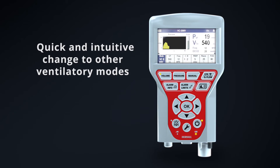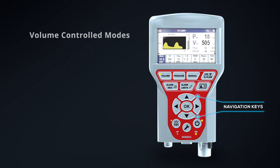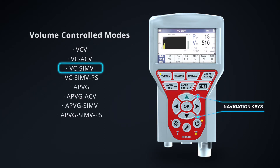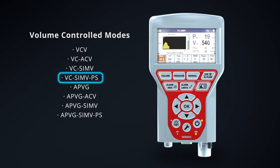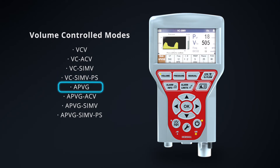The selection of other ventilation modes is quick and intuitive. To switch to other volume controlled modes, press the navigation keys. Switching to the desired ventilatory mode, in this case adaptive pressure volume guaranteed, will not occur until you confirm it by pressing OK.